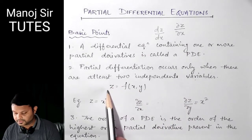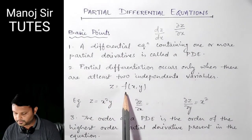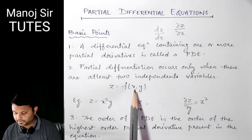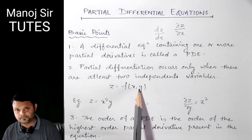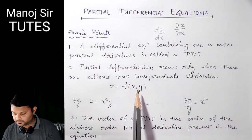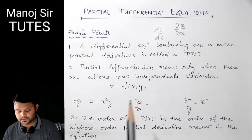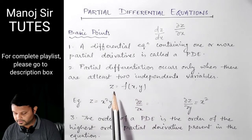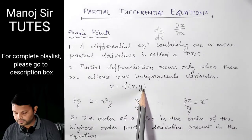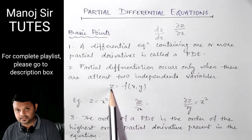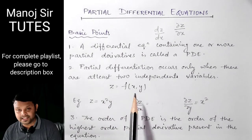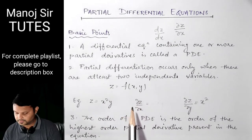Z is known as the dependent variable, because the value of Z depends on the values of X and Y. As the values of X and Y change, the value of Z also changes. So we can say: if Z is a function of X and Y, then Z is a dependent variable and both X and Y are independent variables.